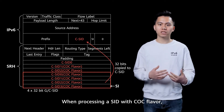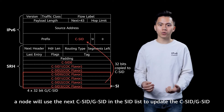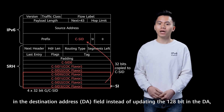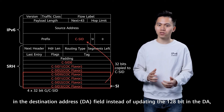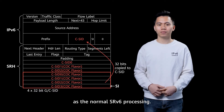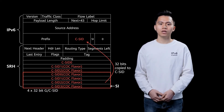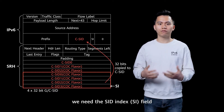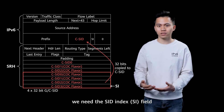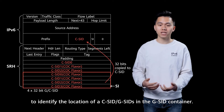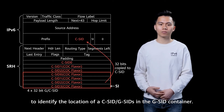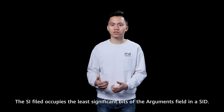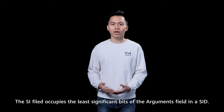When processing a SID with the COC flavor, a node will use the next C-SID in the segment list to update the SID in the destination address field, instead of updating the full 128-bit in the DA, as in normal SRV6 processing. So in order to locate a C-SID in the segment list, we need to define a new term called Segment Index (SI), to identify the location of the C-SID in the G-SID container. The SI field occupies the least significant bits of the arguments field in a SID.